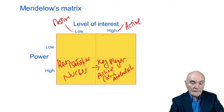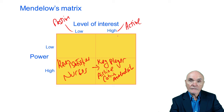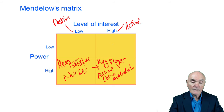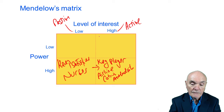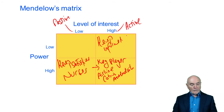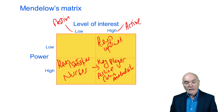Then we have people with a high level of interest but no power. These are the people that you keep informed.